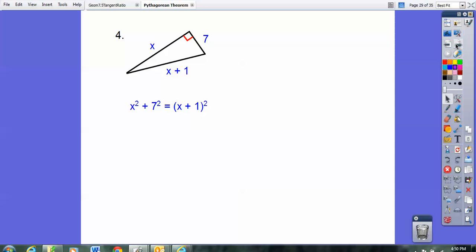Be careful. A lot of students want to just square x and square 1. It's actually a binomial, and you've got to write it twice because you have to foil that out. Don't forget about your outers and inners when you're foiling. Of course, 7 squared is 49. So when I foil that out, I get x squared plus 1x plus 1x plus 1.